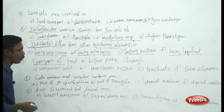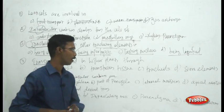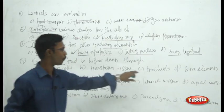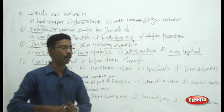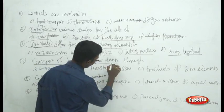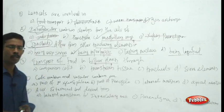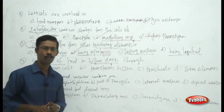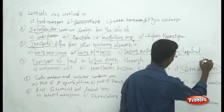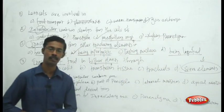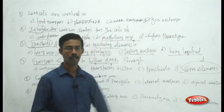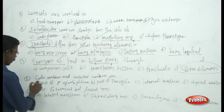Next question: the transport of food in higher plants occurs through which structure? Choices are companion cells, transfusion tissue, tracheids, and sieve elements. In higher plants, food substances are transported through sieve elements. They are the primary structures in angiosperms for transporting food particles.